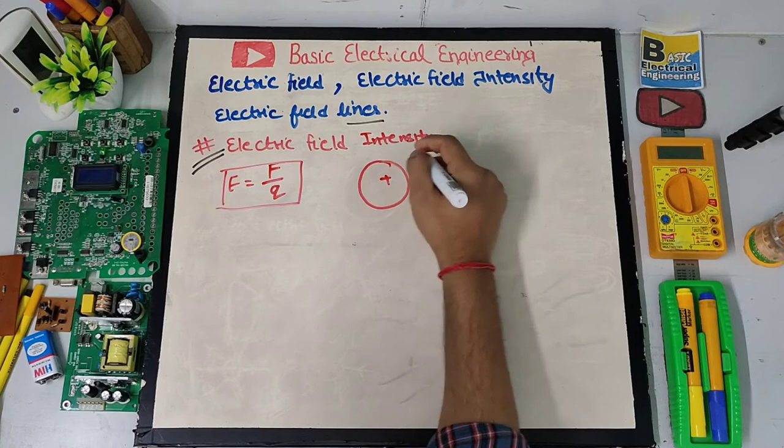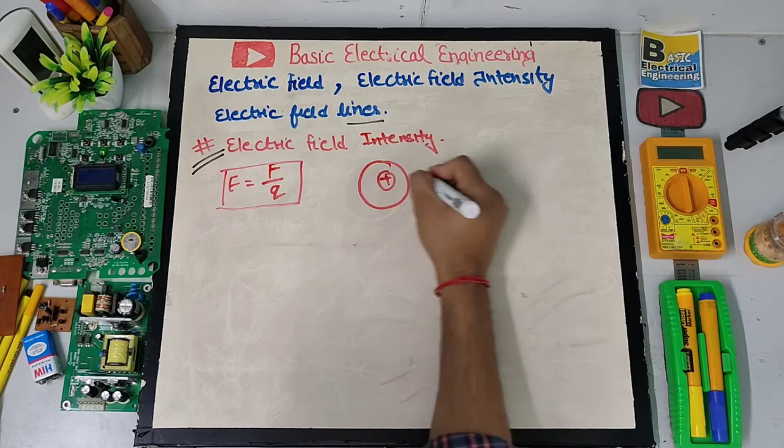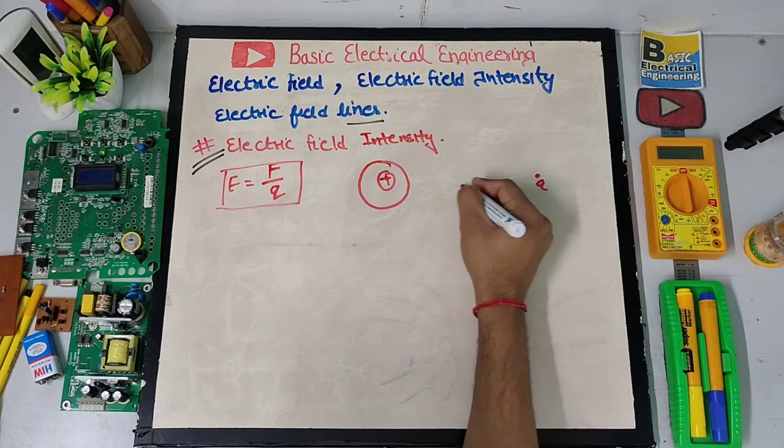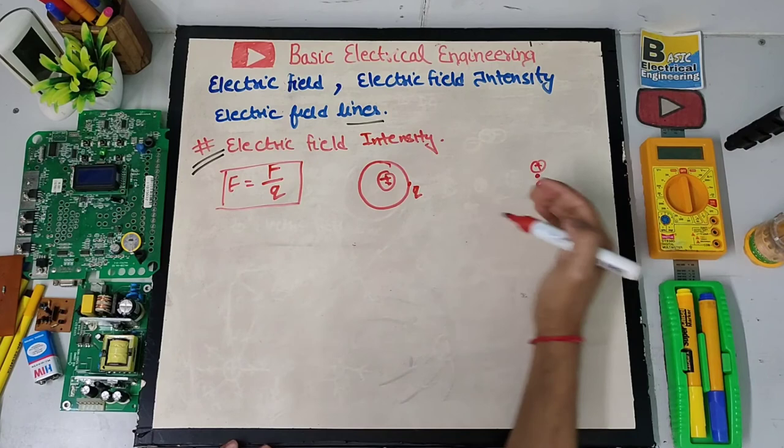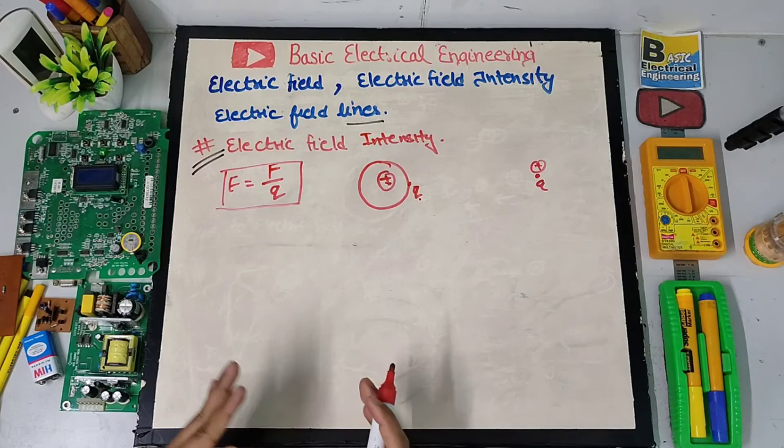When we discussed the electric field, I told you there is a positive charge and in its surrounding space there is an electric field. As we move a charge into that space, a force acts on it. If it is a positive charge, the force will be outward. If it is a negative charge, the force will be inward. This force on the charge with respect to the source charge is what defines electric field intensity.